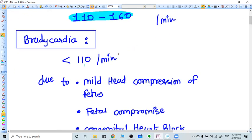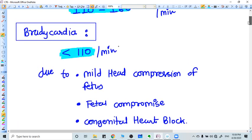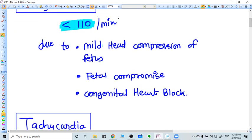What is the fetal bradycardia? When the fetal heart rate FHS is less than 110. What are the conditions in which bradycardia occurs? It may be due to mild head compression of the fetus. When there is a contraction, uterine contraction, the head of the fetal head gets compressed. Because of the compression, the vasovagal reflex will be there. Due to vasovagal reflex, the heart rate will go down and the bradycardia will be there.